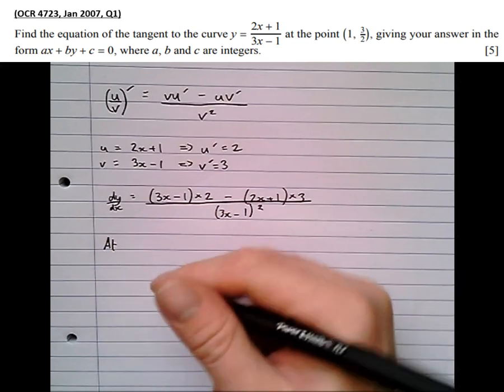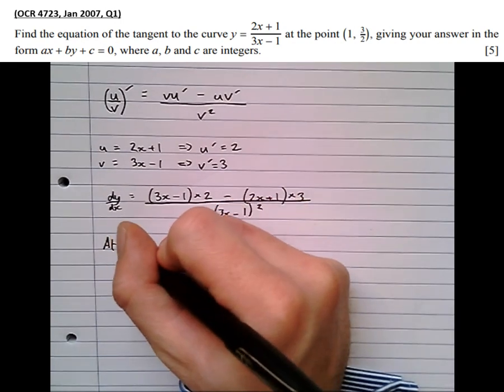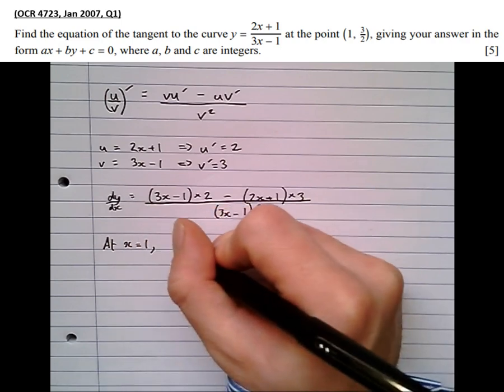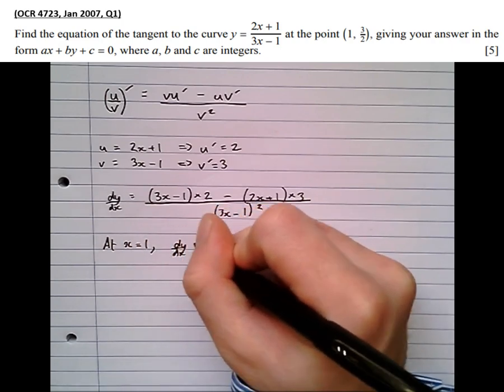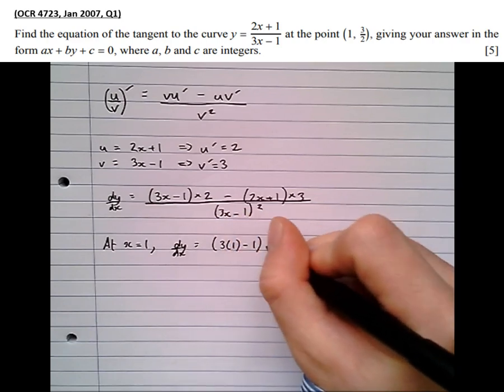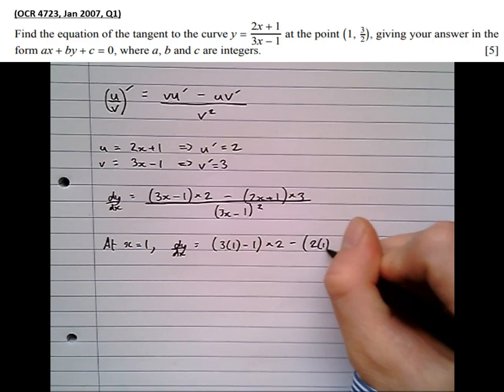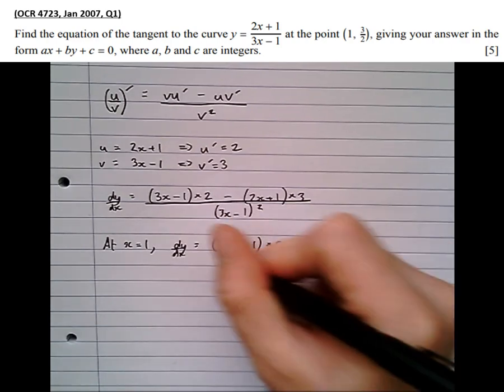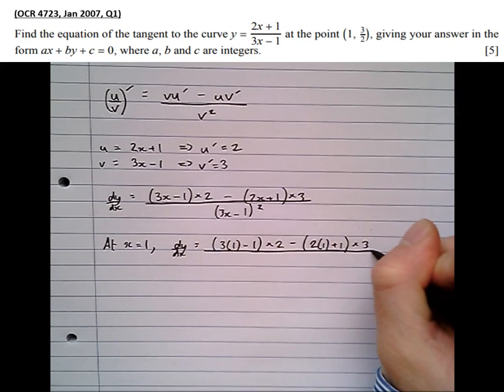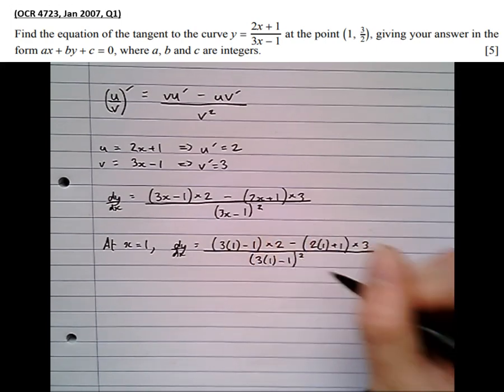And now we want to find out what the gradient is at this point here, when x equals 1. So at x equals 1, dy by dx, writing down all of our working, 3 lots of 1 minus 1 times 2, minus 2 lots of 1 plus 1 times 3, all over 3 lots of 1 minus 1 squared.